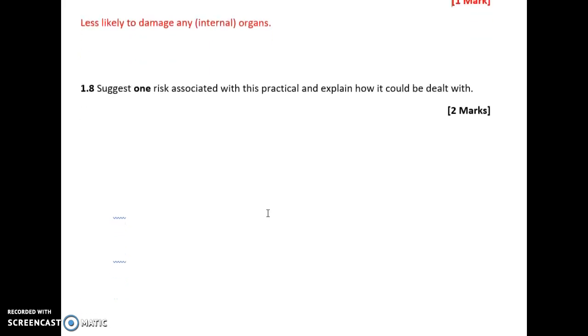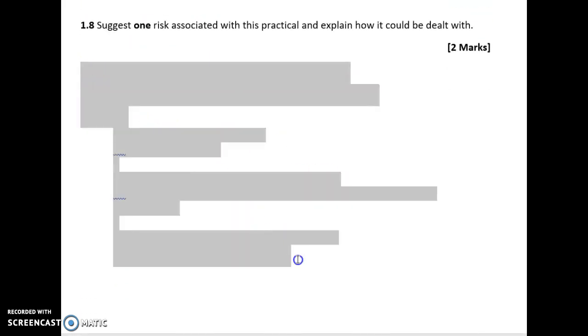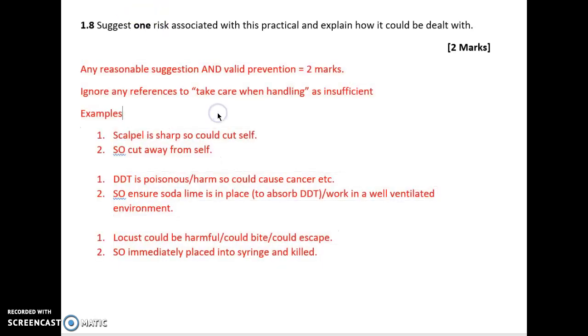Suggest one risk associated with this practical and explain how it could be dealt with. There's lots of different things that we can consider. For example, scalpel is sharp so could cut self, therefore cut away from self. Or DDT is poisonous, so it could cause cancer, it could kill your cells, it could just kill you. Ensure soda lime bag is in place or work in a well-ventilated environment. Locust or the insect could be harmful, it could damage you, it could escape, so place it into the syringe and kill it immediately. Any reasonable suggestion and valid prevention will get you two marks. However, saying things like take care when you handle it will probably not get you the mark as the examiners are looking for something very specific and a very specific reason of how to deal with the problems based on whatever context they give you.